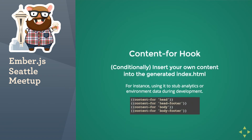The content-for hook is the one I was talking about earlier. If you look inside the index.html file of your Ember CLI project, you'll see a bunch of these content-for placeholders: head, head-footer, body. In the content-for hook, you basically say if the type of content matches a name, it'll run the hook for each of those placeholders. If it matches, say, head, you can use that to inject code or string content that you want to put in there.